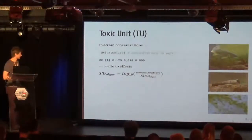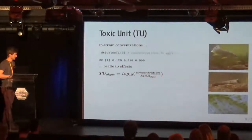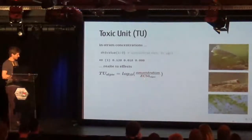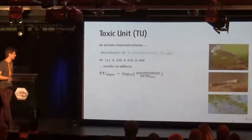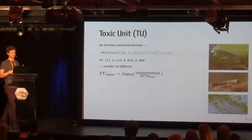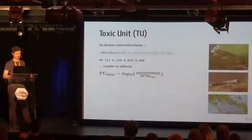Basically, you take the in-stream concentrations, divide them by an EC50 according to the organism group, and then take log base 10. The result is the toxic unit, which is a frequently used measure in our field.